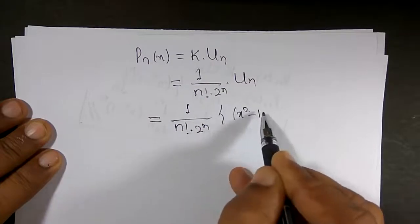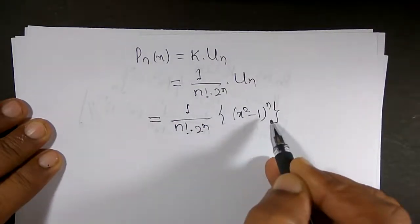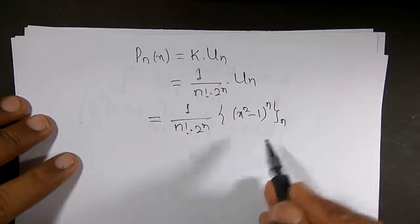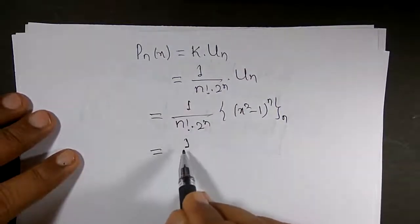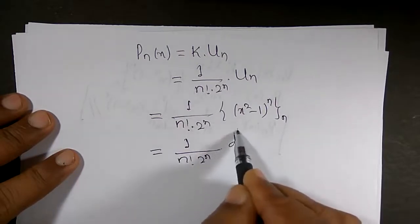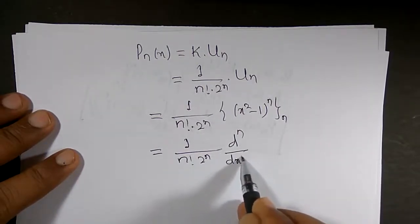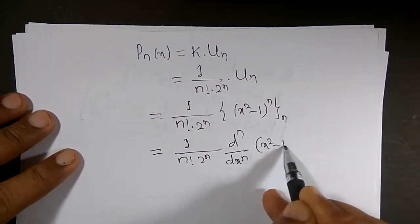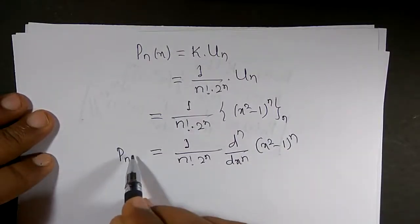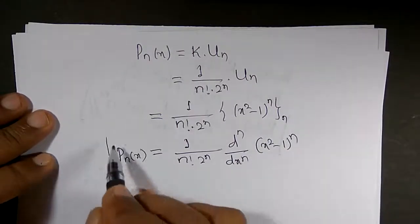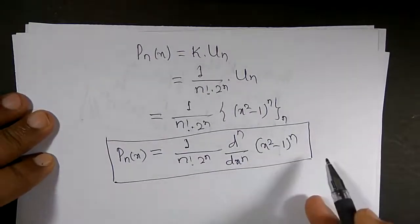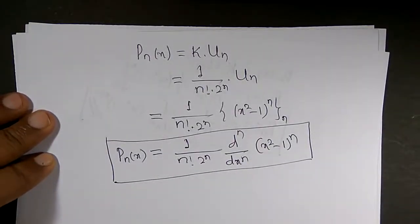Now I will substitute the value of k. Pₙ(x) = k·uₙ, where k = 1/(n! · 2ⁿ). So Pₙ(x) = 1/(n! · 2ⁿ) times the nth derivative of (x² - 1)ⁿ, which can be written as 1/(2ⁿ·n!) · dⁿ/dxⁿ [(x² - 1)ⁿ]. This is the required Rodrigues' formula. Thank you.